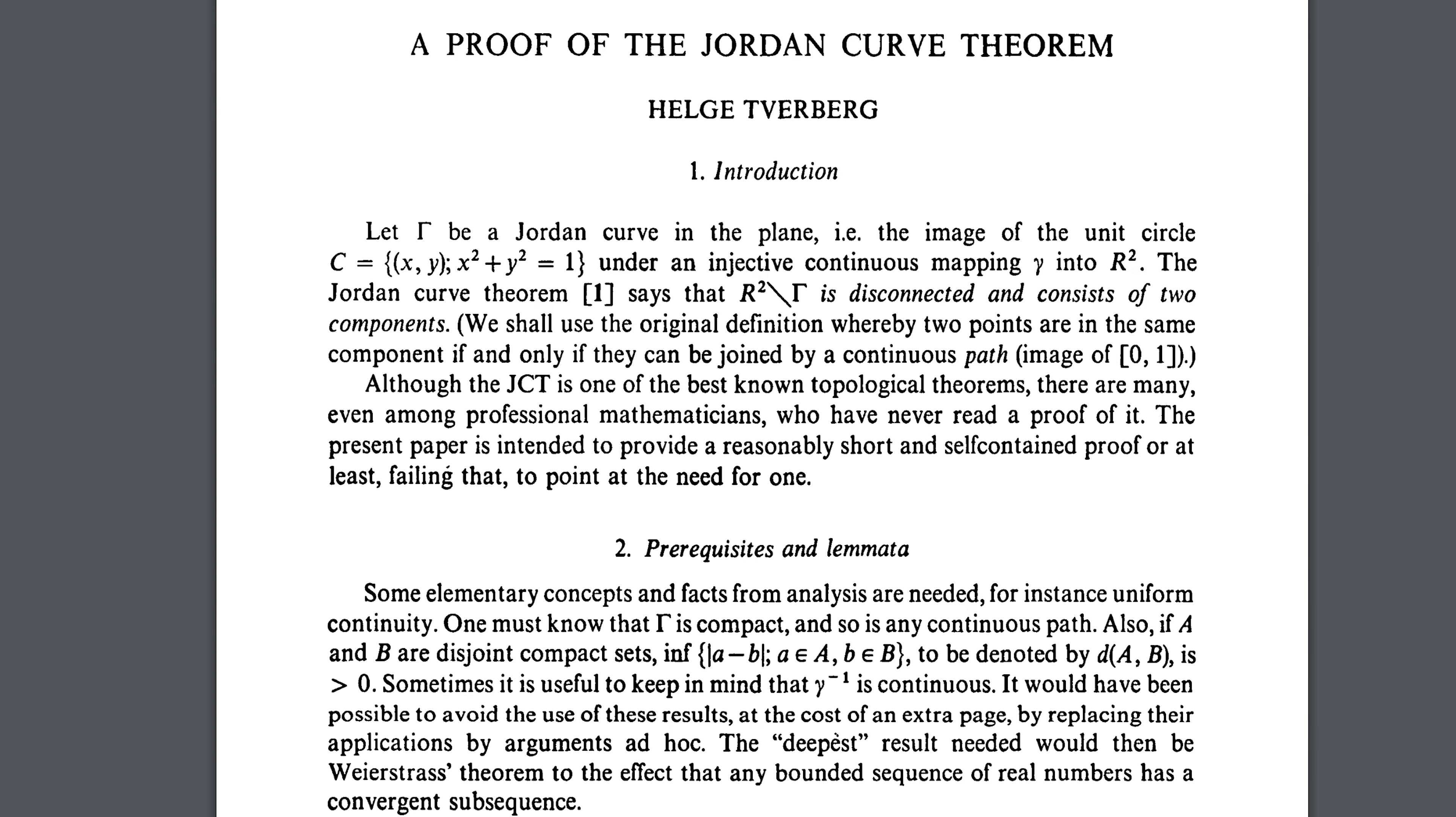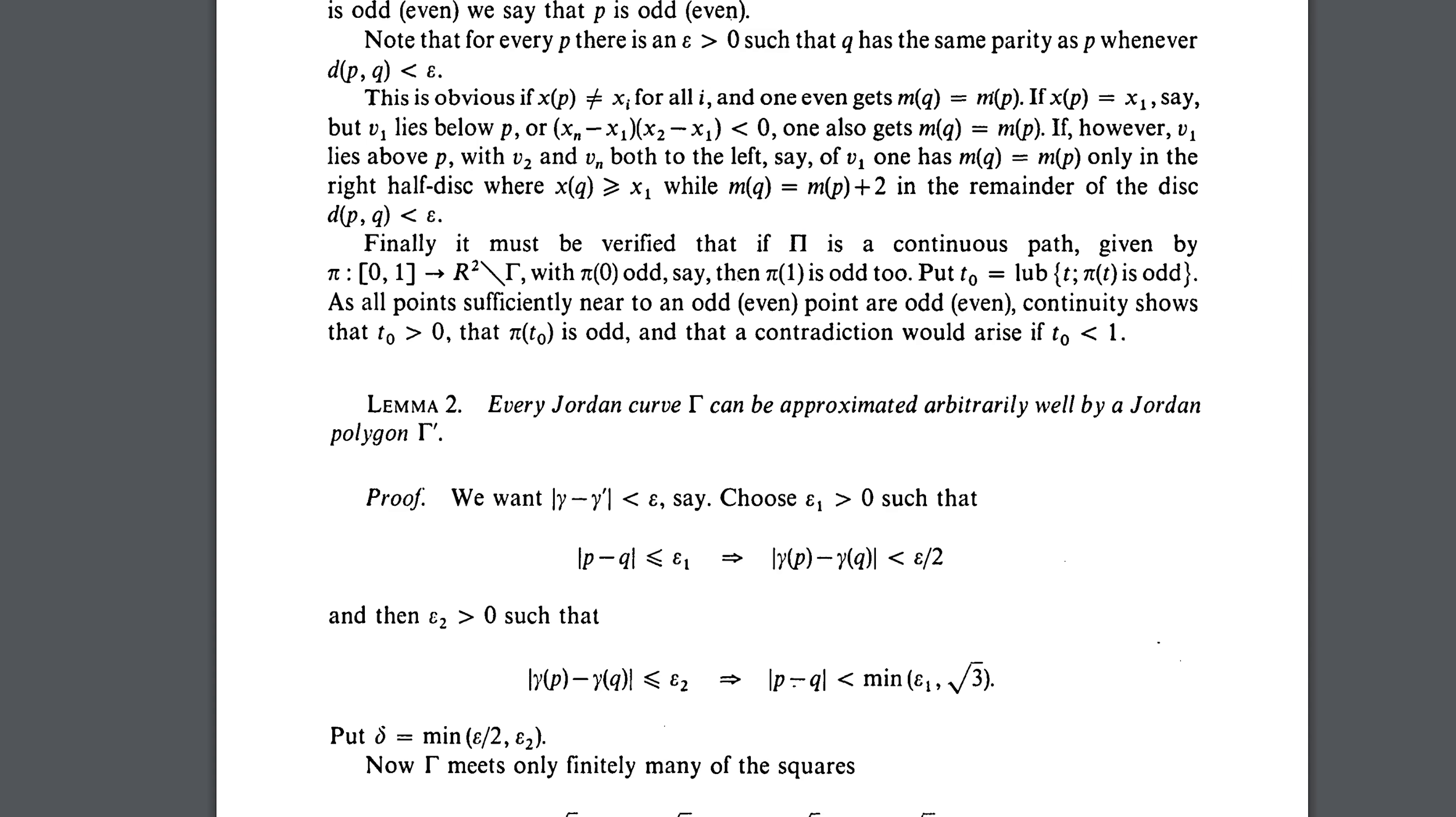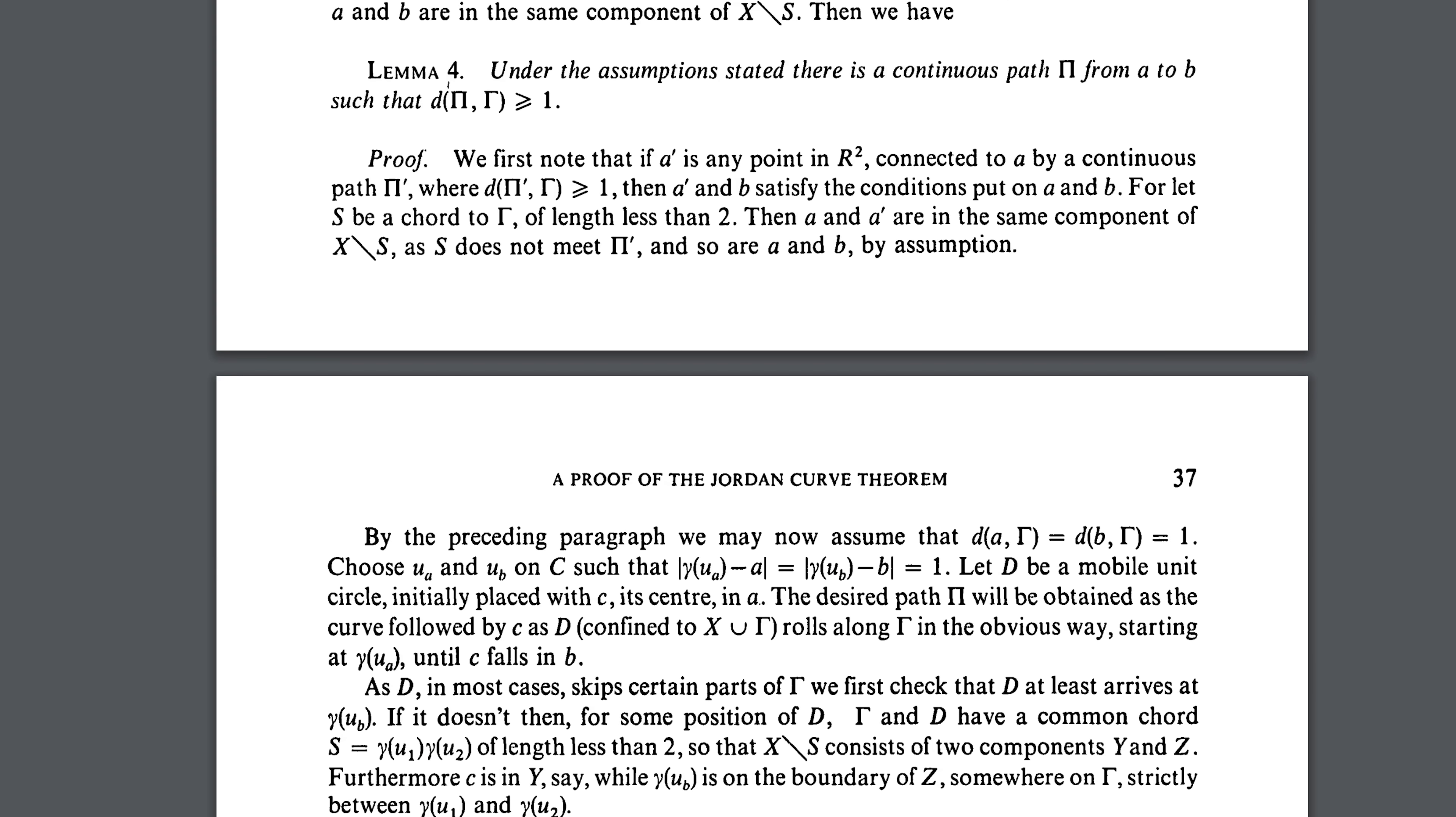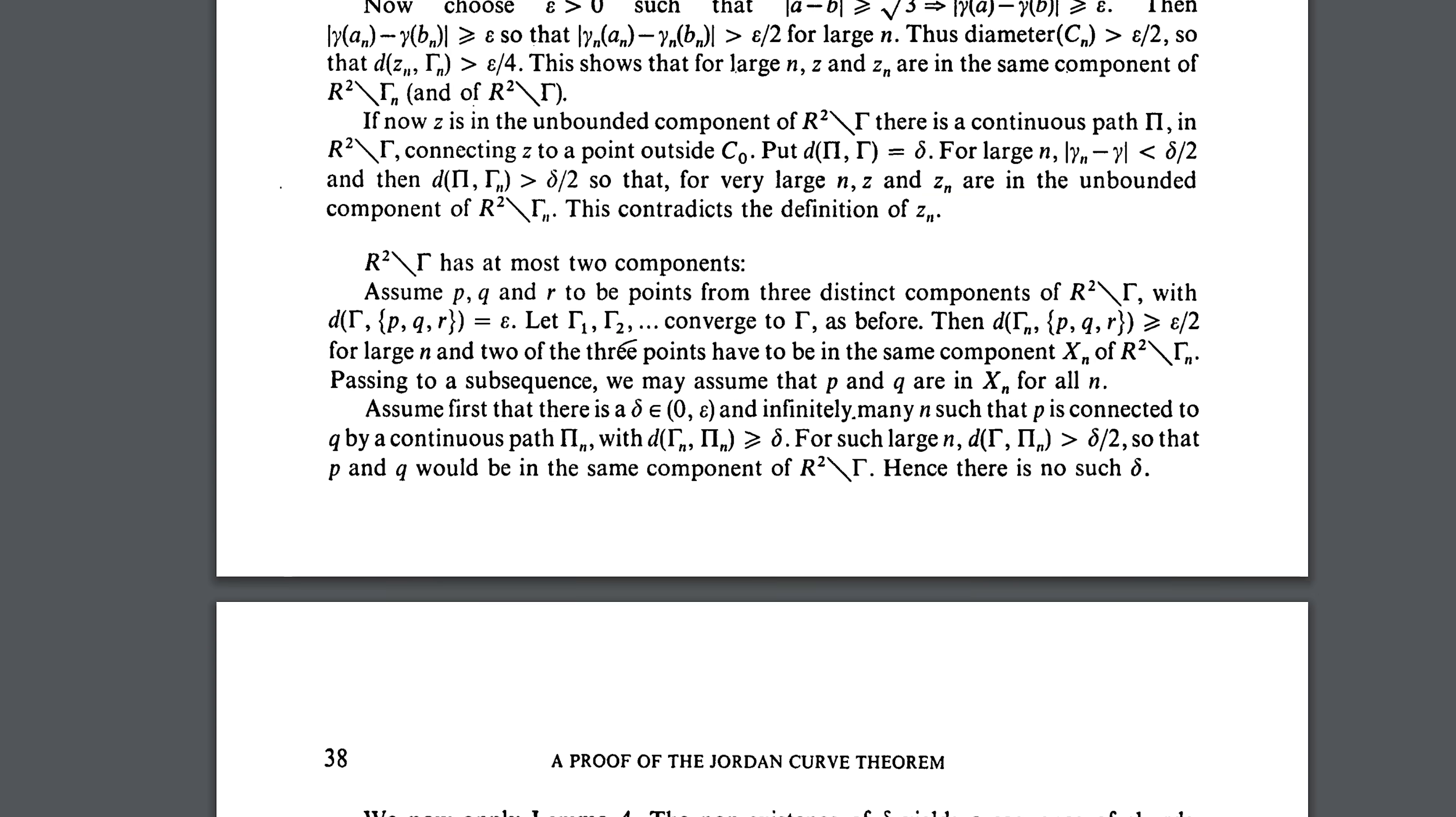Mathematical papers use something called a lemma. A lemma is an intermediate proof that will be needed later to prove what they're trying to ultimately prove. So this paper publishes the proof of the Jordan curve theorem. It shows lemma one, lemma two, lemma three, then lemma four, and then it finally gets to the actual proof.